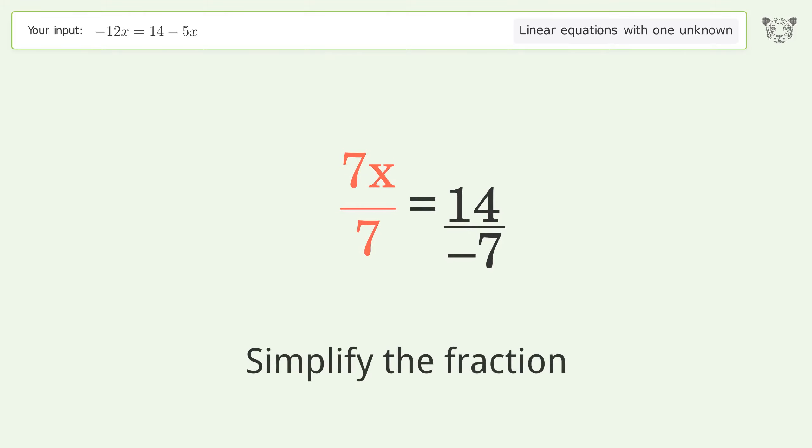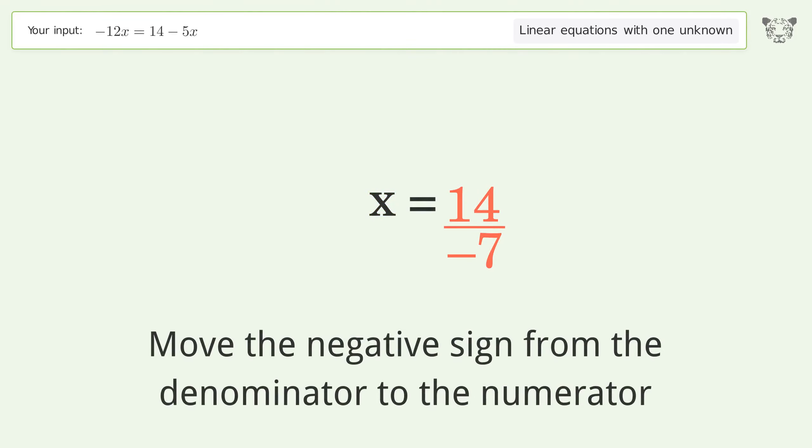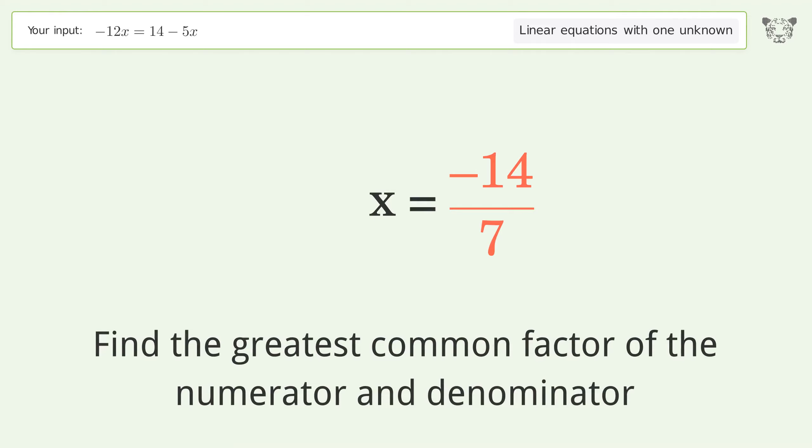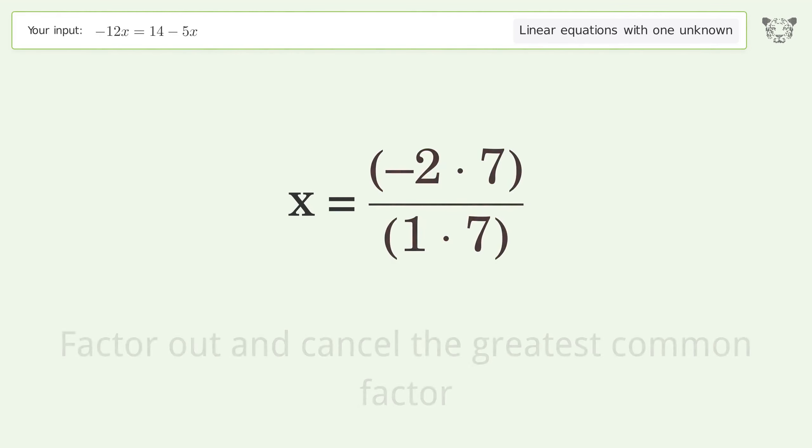Simplify the fraction. Move the negative sign from the denominator to the numerator. Find the greatest common factor of the numerator and denominator. Factor out and cancel the greatest common factor.